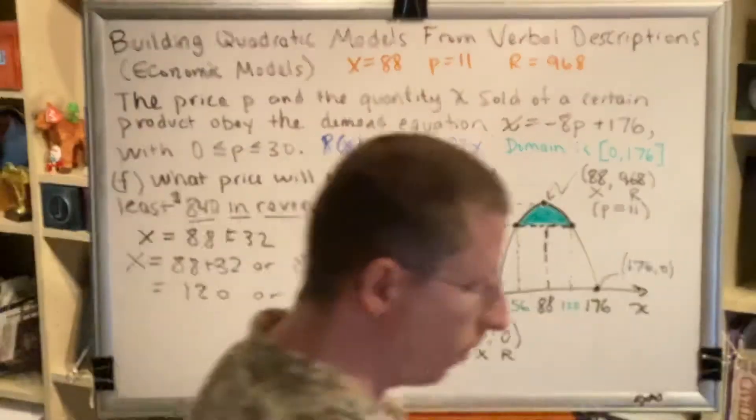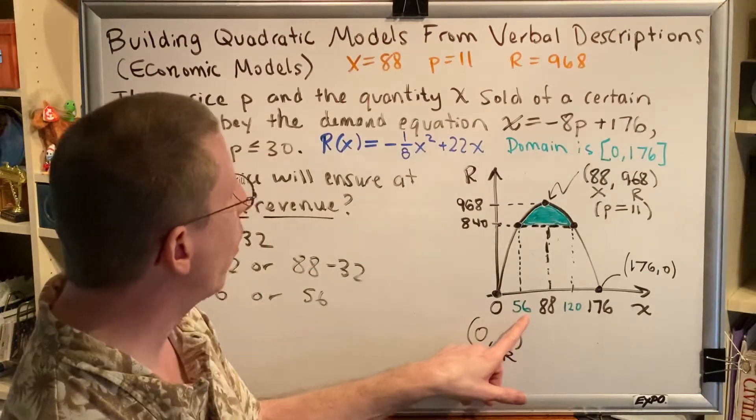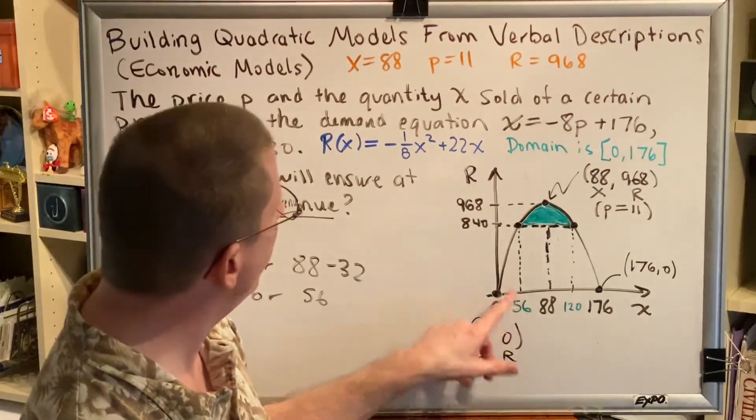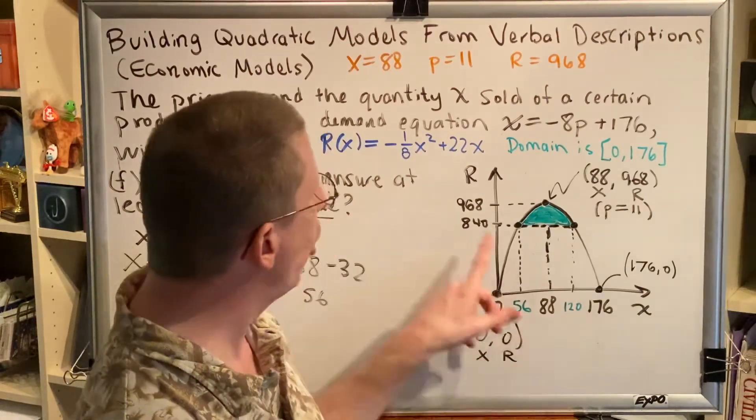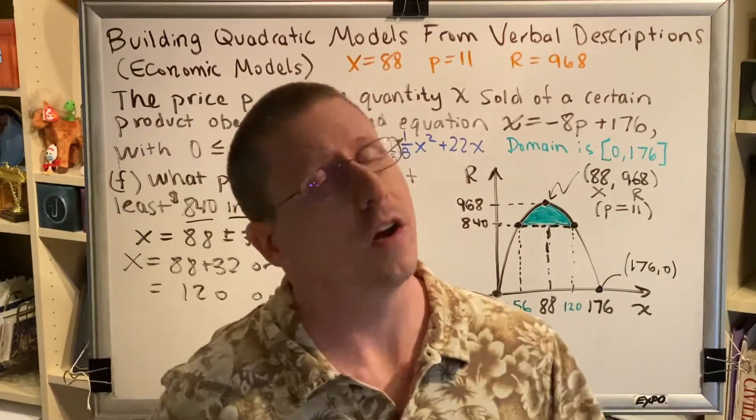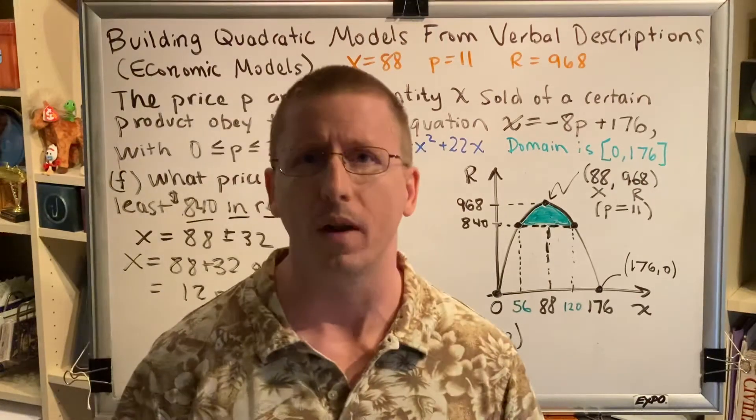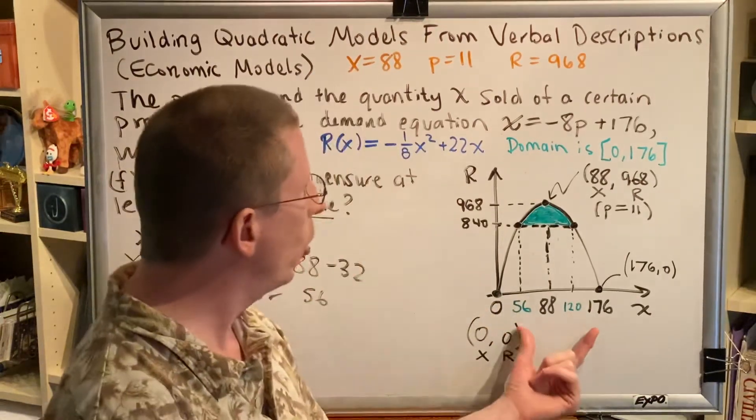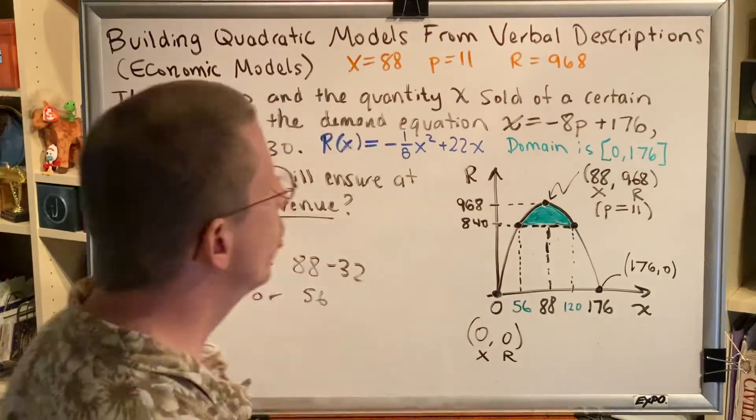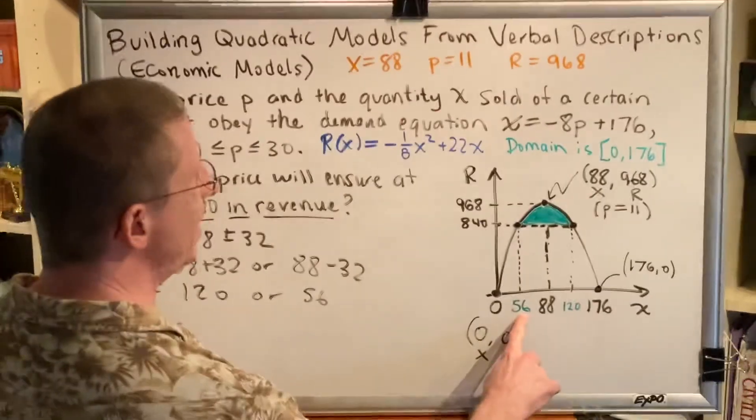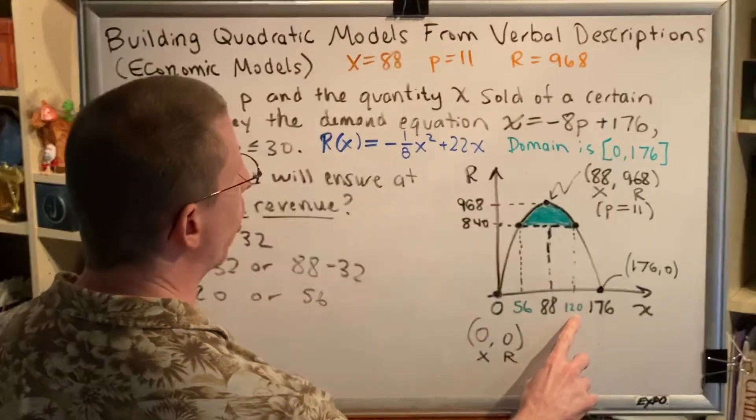Now we're almost at the end of this problem. But there's something that I would like to explain before I continue. Let's take a look at this diagram. If you sell 56 items, then you'll bring in $840. If you sell 120 items, which is a lot more, you will also bring in $840. This is very confusing to students. They think to themselves, how is that possible? If you sell more items, how is it you'll bring in the same amount of money? Here's what they fail to understand. The only way to sell more items is to lower the price. And so when you lower the price, you're bringing in less money for each item.